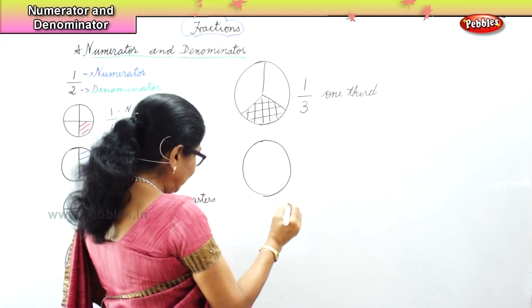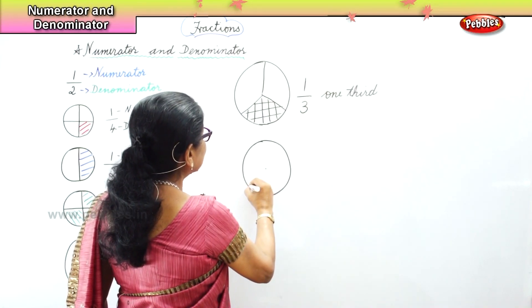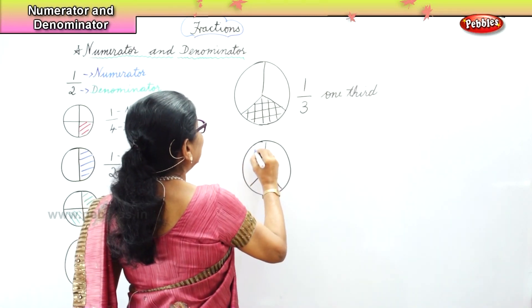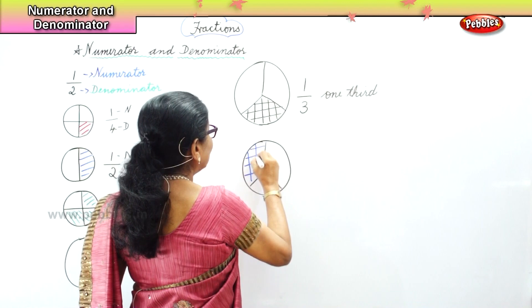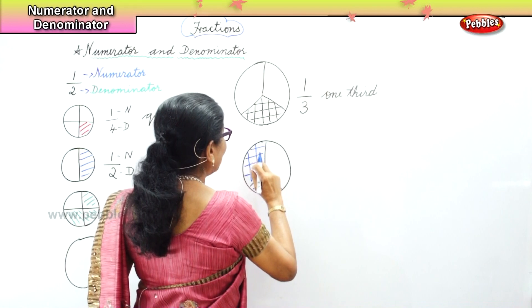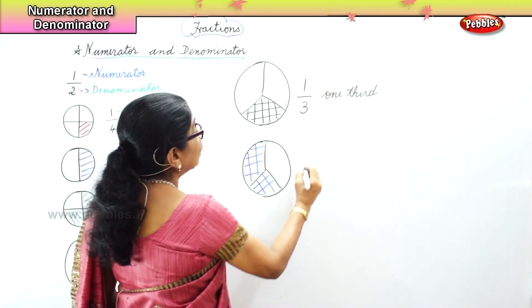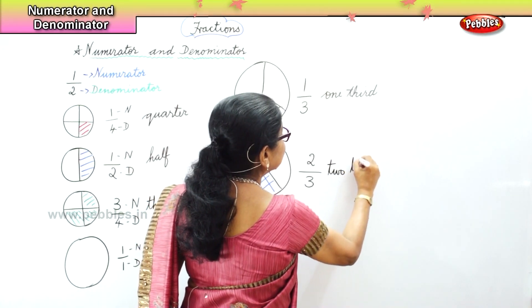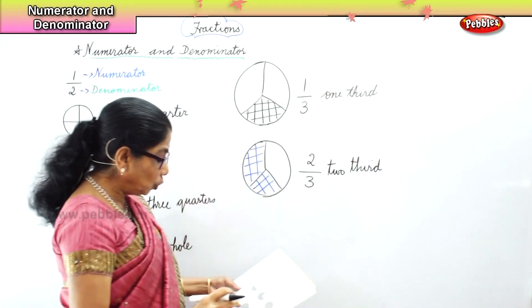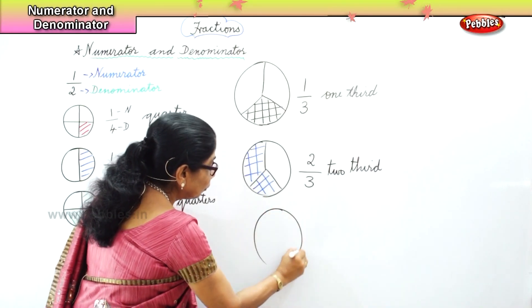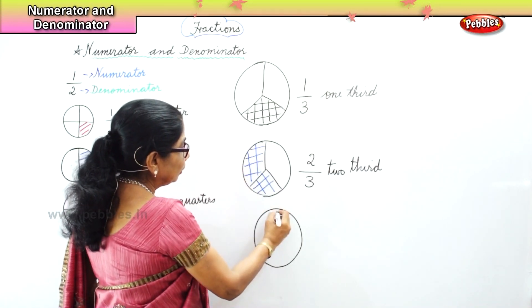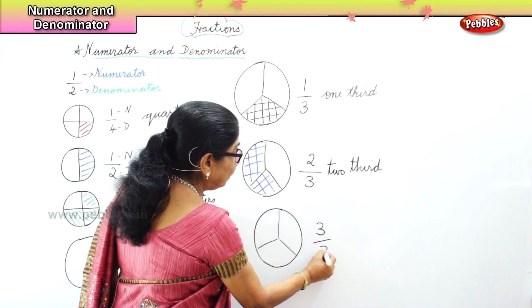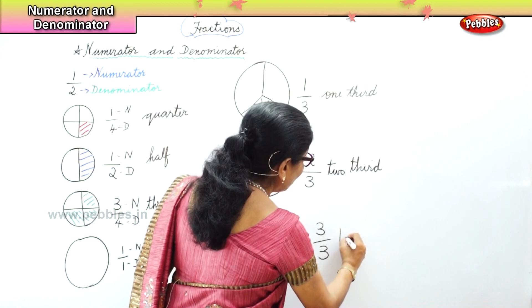I am dividing this circle again into three parts and going to color two portions out of the three. Two portions are colored, so we write that as two third — two parts out of three. For the full circle, all three parts out of three parts are colored, which is called one whole.